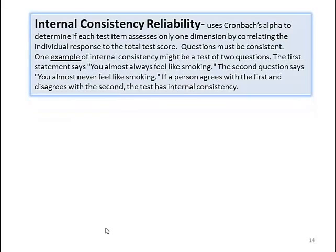Then there's internal consistency reliability. This uses Cronbach's alpha to determine if each test item assesses only one dimension by correlating the individual response to the total score. Questions must be consistent. One example: a test has a question that says 'you almost always feel like smoking,' and later a question that says 'you almost never feel like smoking.' If the person agrees with the first but disagrees with the second, then we say the test has internal consistency on this item.